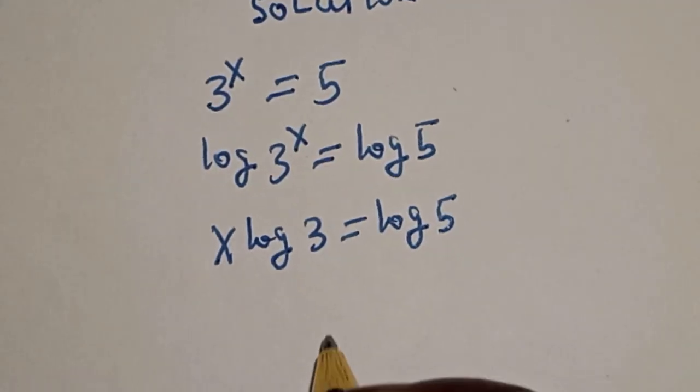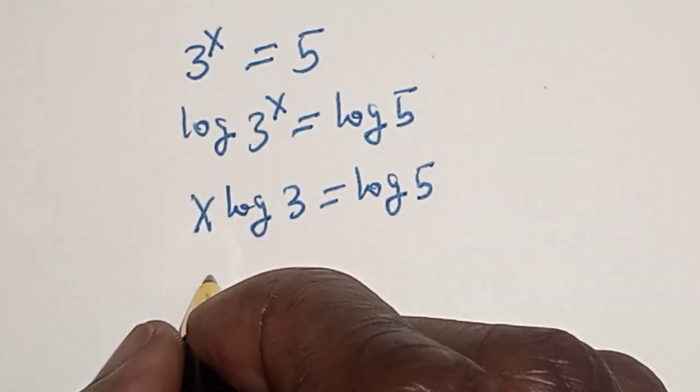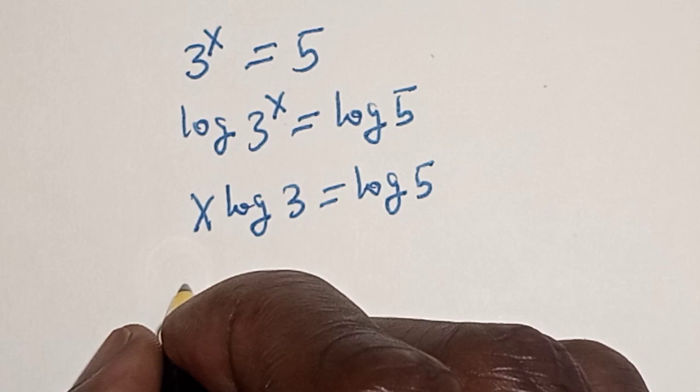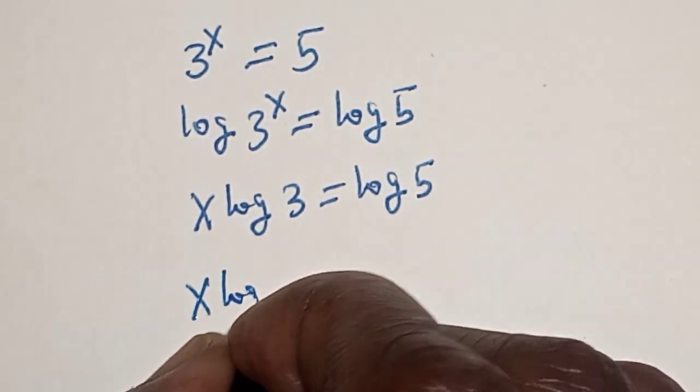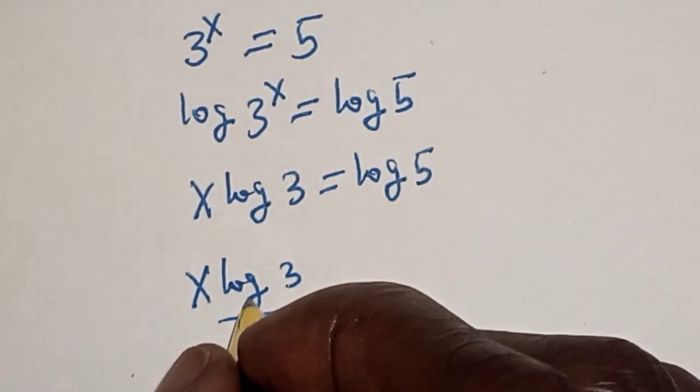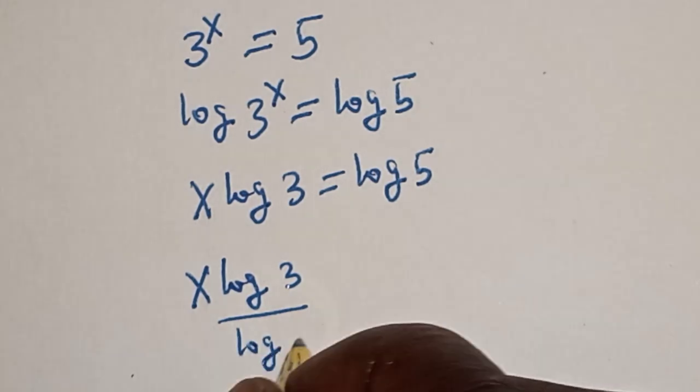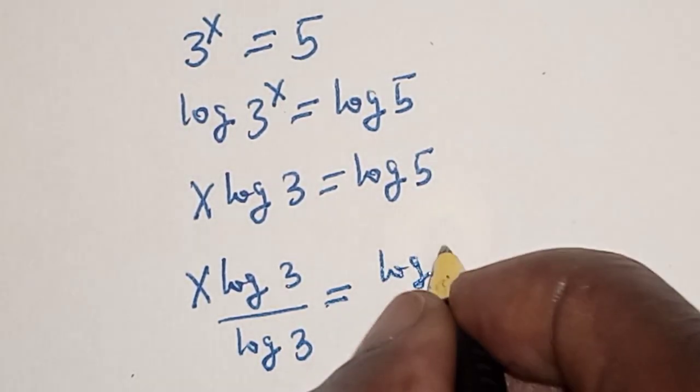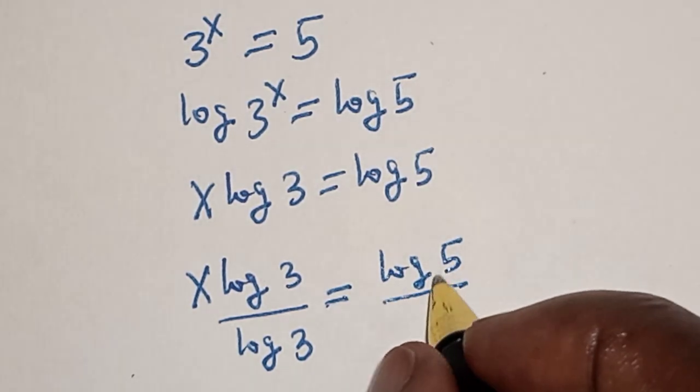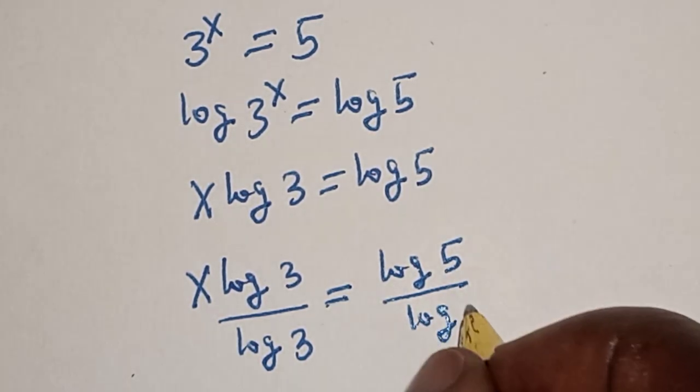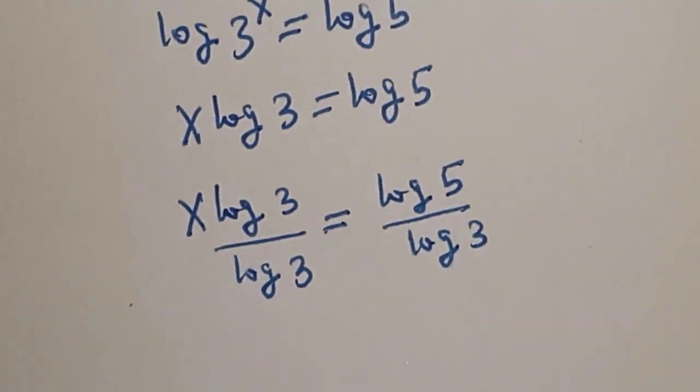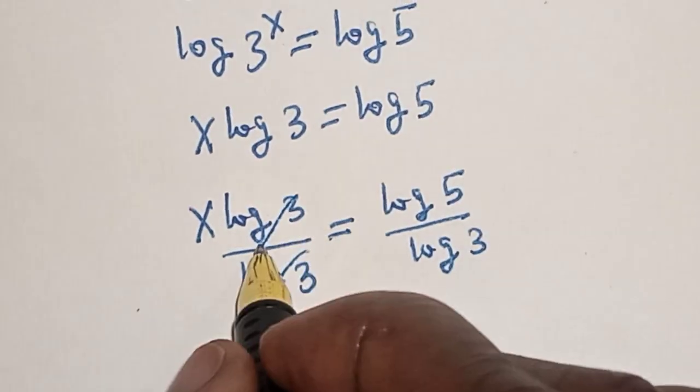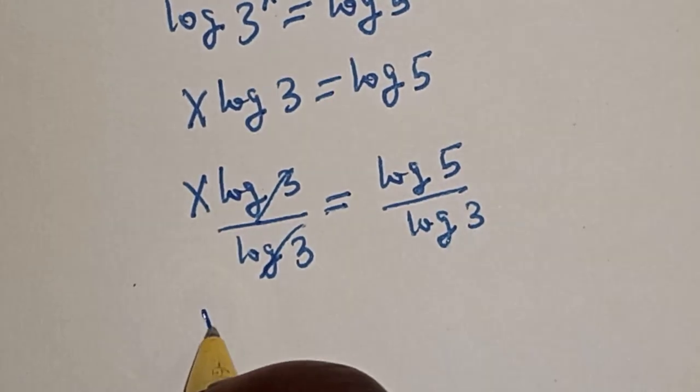Let's divide both sides by log 3 because we are looking for the value of s. s log 3 divided by log 3 is equal to log 5 divided by log 3. This will cancel, so s is equal to log 5 divided by log 3.